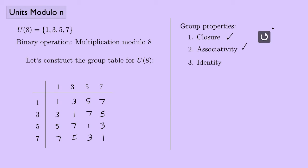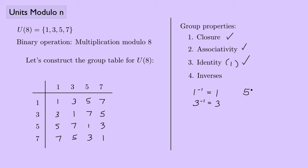For identity: we already showed that 1 is our identity element. And for inverses: 1 is its own inverse, 3 times 3 is 1 so 3 is its own inverse, 5 times 5 is 1 so 5 is its own inverse, and 7 times 7 is 1 so 7 is its own inverse. Inverses work.